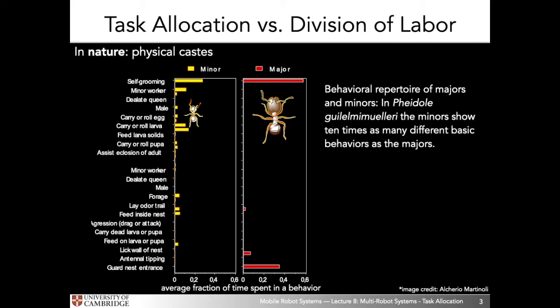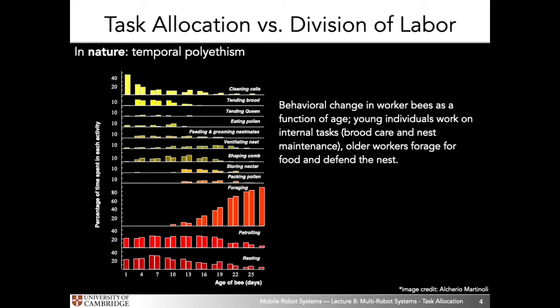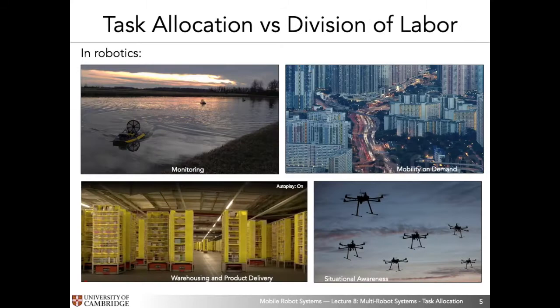These different types of ants have specific behavioral repertoires that don't overlap. Minor ants have ten times as many different behaviors as the major ants belonging to the same natural group. For example, minor ants tend to spend more time doing self-grooming, whereas major ants have specialized to guard the nest entrance. We can also look at temporal polyethism, where specializations adapt and change during the lifetime of organisms. For example, younger worker bees tend to spend more time cleaning cells, while older bees tend to spend more time patrolling and defending the nest.